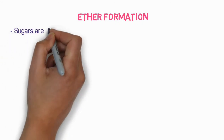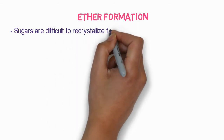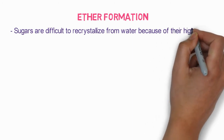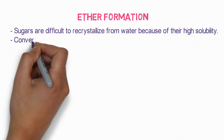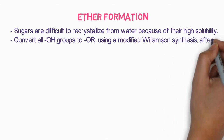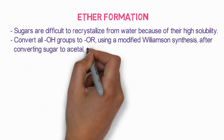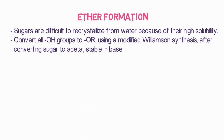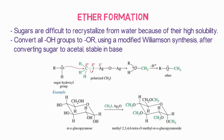The next reaction is ether formation. Sugars are difficult to recrystallize from water because of their high solubility, but when we convert all hydroxyl groups to ether groups using a modified Williamson synthesis method, ethers are formed after converting sugars to acetals. These ethers are stable and this reaction is similar to that of glycosides, forming special ethers which are more stable and crystallize well.